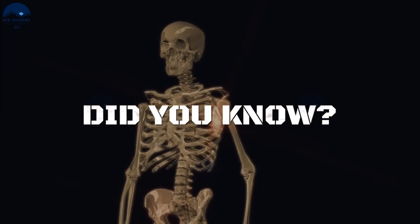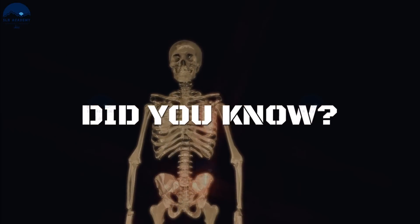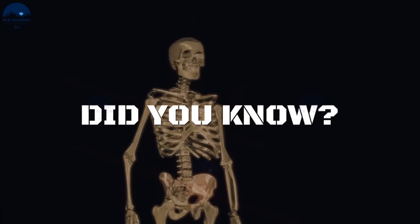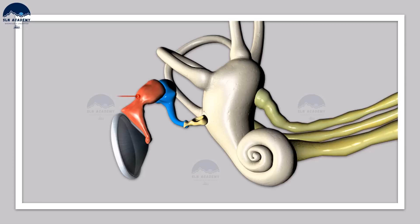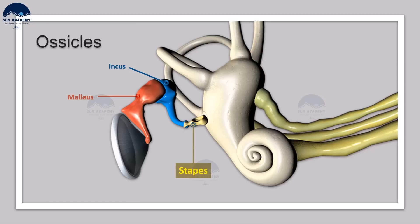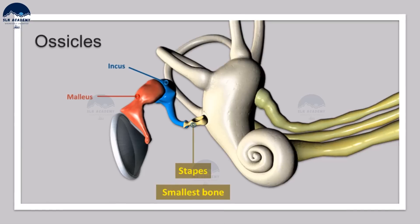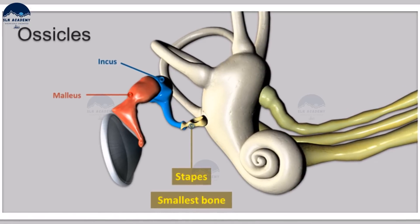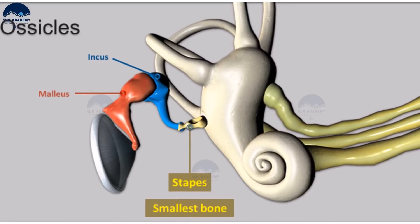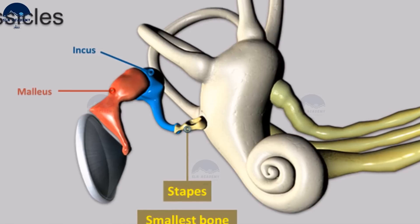Each middle ear contains three tiny bones: malleus, incus, and stapes. They are collectively called ear ossicles. The stapes, present in the middle ear, is the smallest and lightest bone of the human skeleton. This bone is also called the stirrup because of its Y-shape.